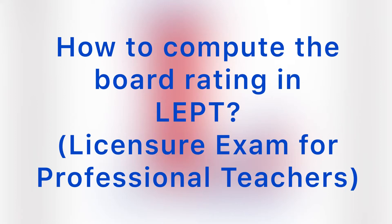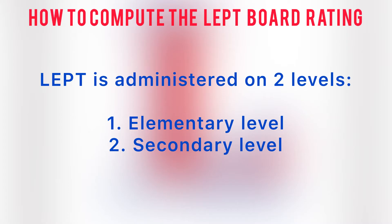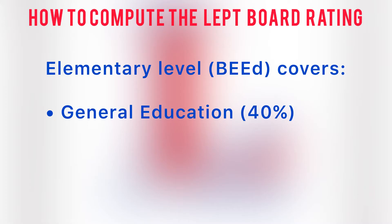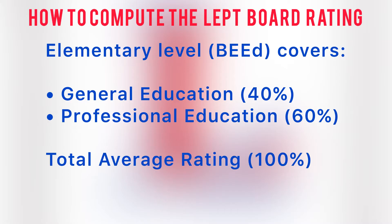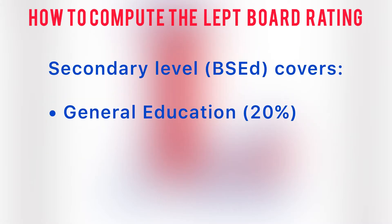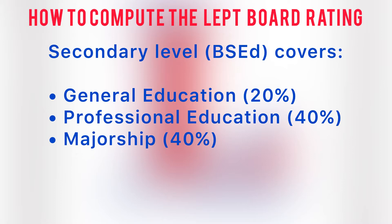How to compute board rating in LEPT. LEPT is administered on two levels: elementary level and secondary level. The elementary level covers 40% general education and 60% professional education. While the secondary level covers 20% general education, 40% professional education, and 40% majorship.